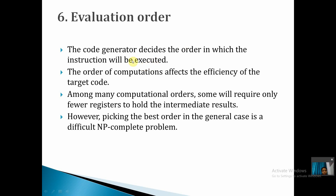The final issue is evaluation order. The order in which instructions are executed is also very important for the efficiency of the target code. Among many possible computation orders, some will require fewer registers. Since register availability is limited, selecting a proper evaluation order that reduces register requirements is very important. This is also an NP-complete problem. These are all the issues in code generation.